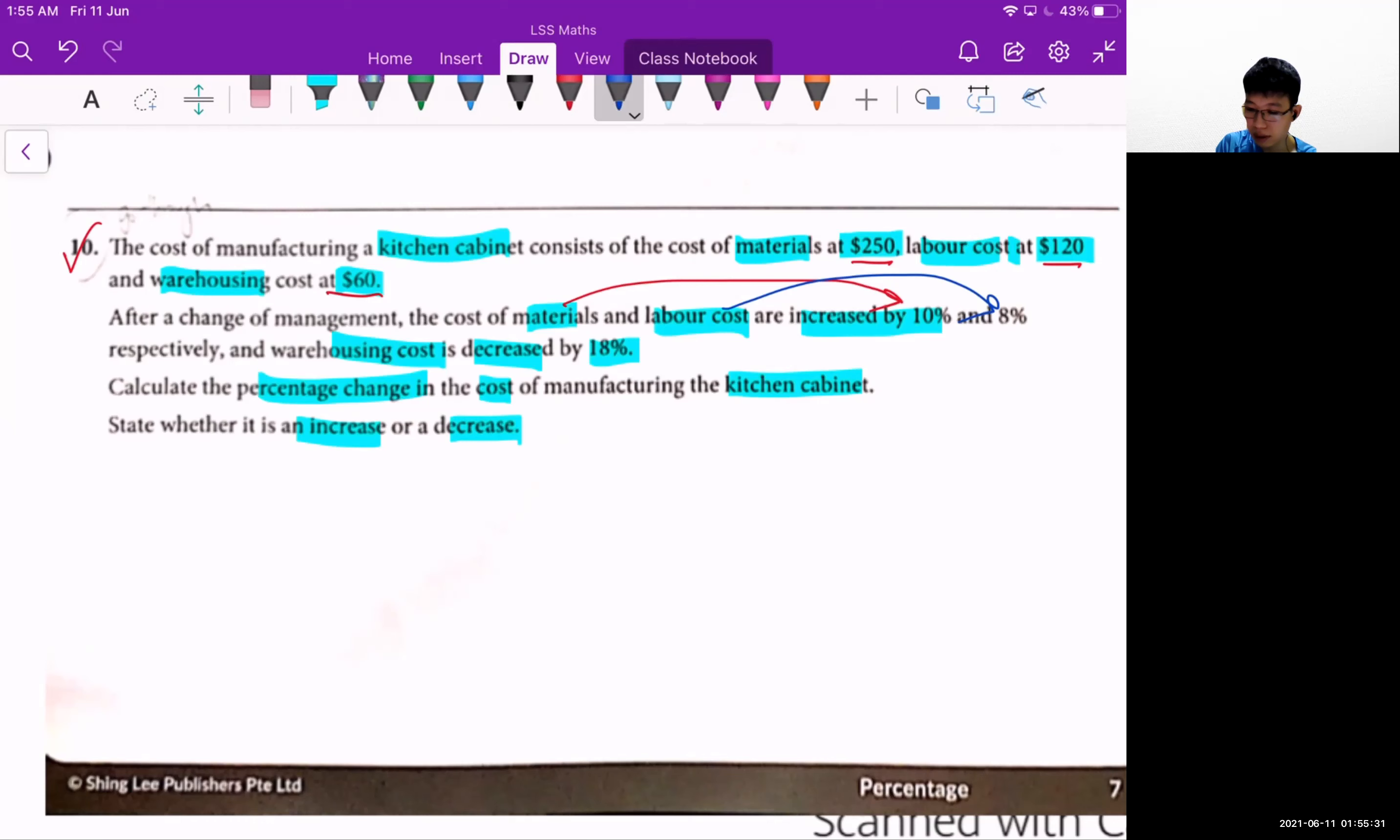So first you need to find out the change. For the material cost, 10% over 100 times $250 - I'm trying to find out what is 10% of $250 for this material cost, which gives me $25. This is an increase.